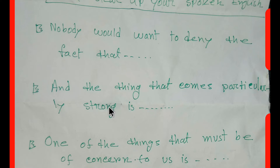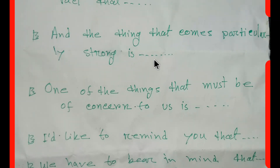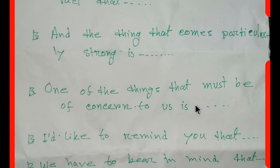'The things that come particularly strong is...' Here you have to use a clause. For example: 'The things that come particularly strong is that he's not an honest man.' Our third expression is: 'One of the things that must be of concern to us is...'